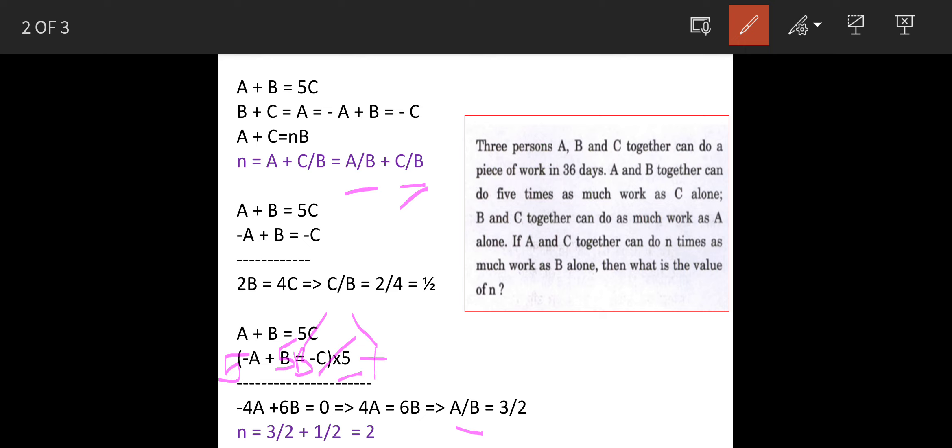Now N is equal to A upon B plus C upon B. So we put the values 3 by 2 and 1 by 2. So the value of N is 2.